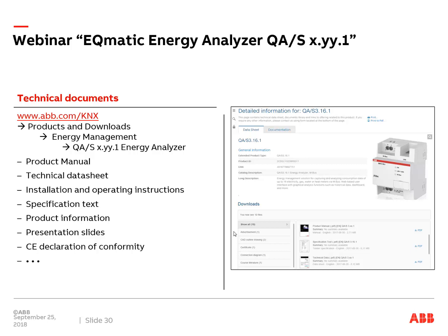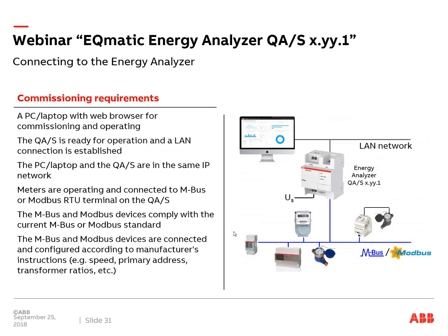All information about the devices is available on our website at abb.com/knix, then go to products and downloads, energy management. There you can find the four Energy Analyzer QAS models with product manuals, handbooks, specification texts, pictures, CE declarations, and all documentation. For commissioning, requirements must be met: a standard PC or laptop with a browser, the energy analyzer must be connected to supply voltage and the IP network, the green LED must be on, and MBUS or Modbus devices must be connected.